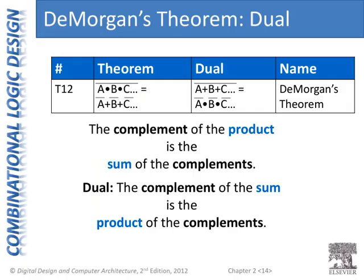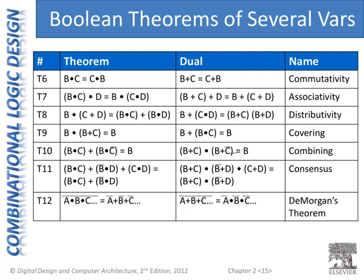Putting them together: De Morgan's theorem says we can take the complement of the product and make that equal to the sum of the complements. Its dual is that the complement of the sum equals the product of the complements of each individual term. Here we have the full list of all Boolean theorems of several variables. In the next modules, we'll talk about how to prove these theorems are true and how to use them to minimize or reduce our equations.